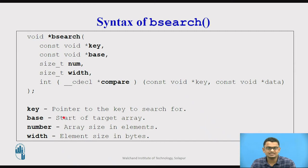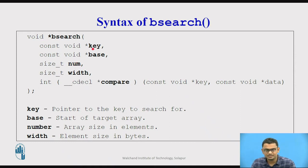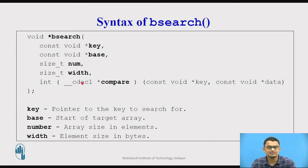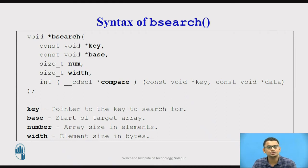Let us discuss the syntax of this function. The first parameter is a pointer to the key value — the value we are searching for. The second through fifth parameters are quite similar to the qsort function we have seen earlier. If you have not gone through that video, I encourage you to also watch the video on how to use qsort.